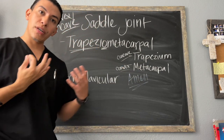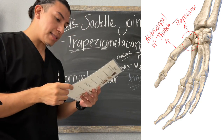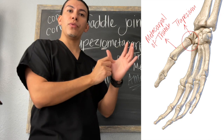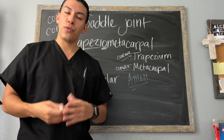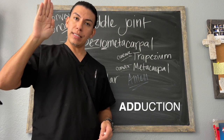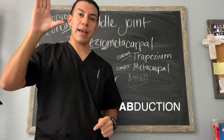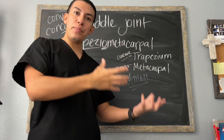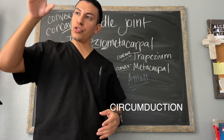Looking at the picture, you can see that the trapezium — that small carpal — is caved in, and the thumb metacarpal has the convex surface. This joint allows for a wider range of movement: we can do flexion, extension, adduction — bringing it back to the midline — and abduction. And those combined movements allow for circumduction, so we can actually twirl our thumbs and do circular movements.